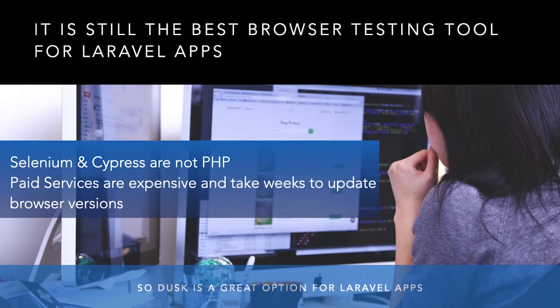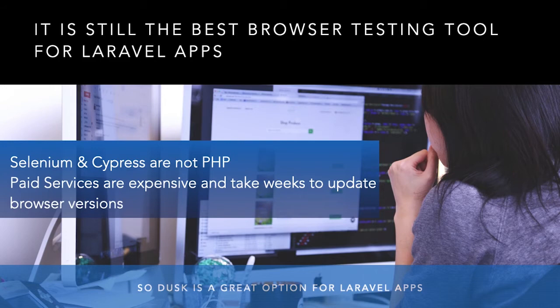It is still the best browser testing tool for Laravel apps. Especially for a monolith app, I don't think there's a better option. Yes, you can use Selenium, which has been around since 2004, or Cypress, which is relatively new. But Selenium is Python-based and Cypress is JavaScript-based — both are not PHP. If you are doing everything in PHP, you'd have to learn JavaScript or Python separately. There's very little learning curve with Dusk because it is PHP and Laravel.